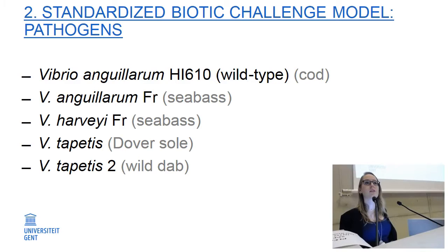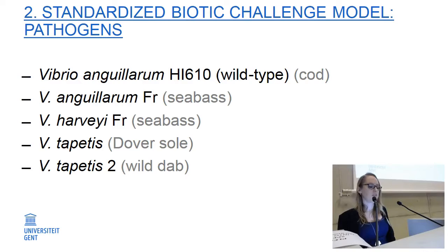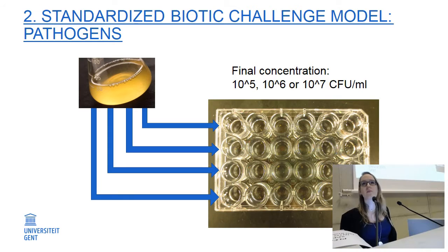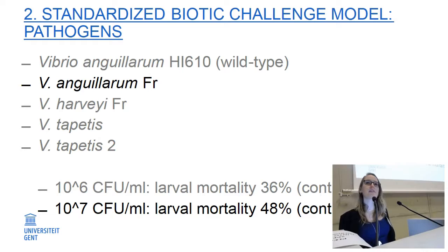If we repeated the experiments a couple of times, we wanted a pathogen that gave the same mortality every time, to then find different solutions or mechanisms. We tested five different Vibrio species, all of them of different origins, and we added them to the well water at 10 days post hatching in a concentration between 10^5 and 10^7 colony-forming units per ml, and then monitored mortality for 14 days. Of all these pathogens, only one gave a significantly higher mortality rate: Vibrio anguillarum R, at a mortality rate of around 48%, at a concentration of 10^7 colony-forming units per ml.